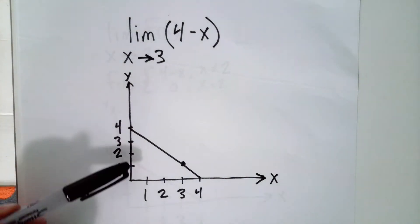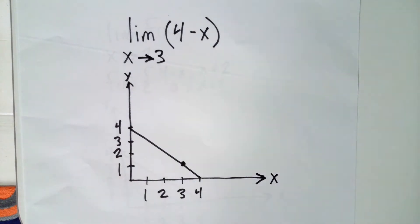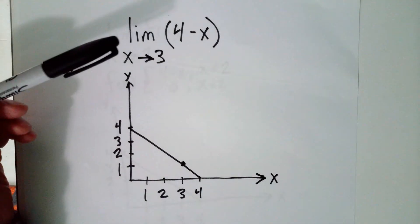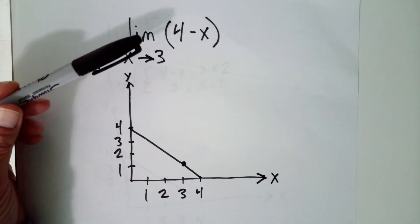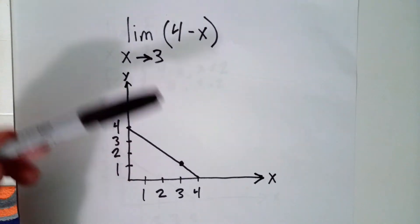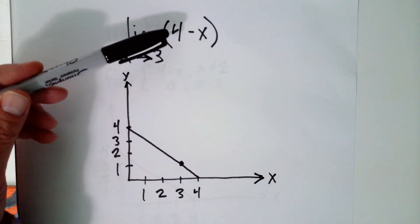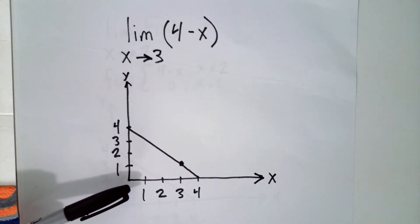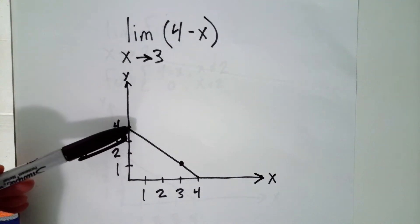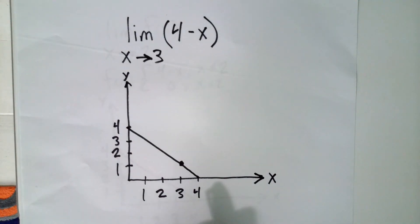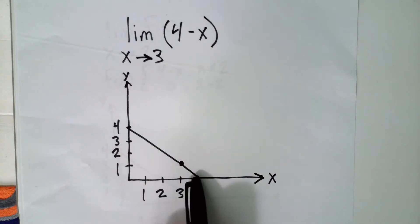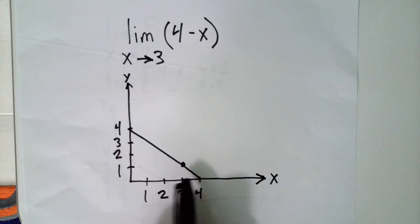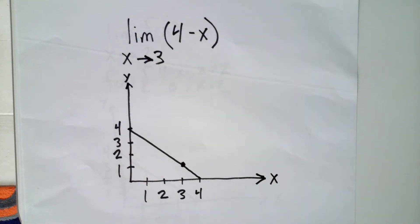Down here we have the graph of 4 minus x. We can verify this: if x is 0, then 4 minus 0 is 4, so the function evaluates to 4. If x is 4, then 4 minus 4 is 0, and the function evaluates to 0. So here's the graph.